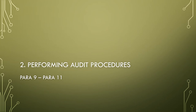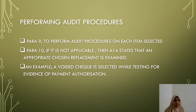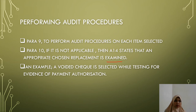The second requirement is performing audit procedures. Paragraph 9 states to perform audit procedures on each item selected. Paragraph 10 states that if an item is not applicable, then under A14, an appropriately chosen replacement is examined. For example, a voided check is selected while testing for evidence of payment authorization.